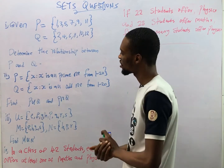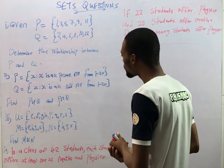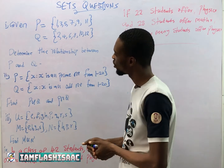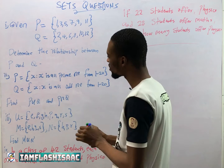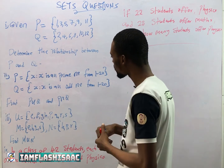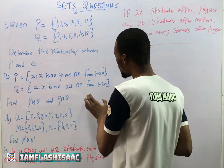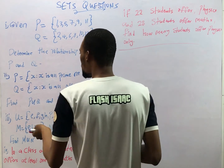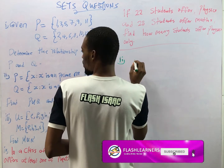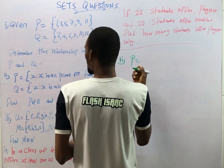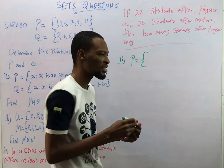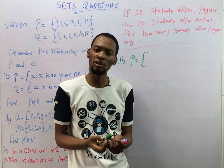So that's the relationship between the two sets — P intersection Q is the empty set. Question 2: P is the set of s such that s is all prime numbers from 1 to 20, while set Q is the set of s for which s is all odd numbers from 1 to 20. Let's write out the sets first.